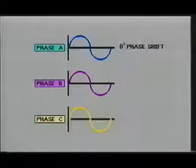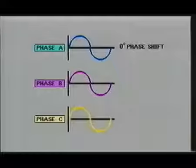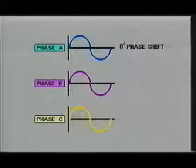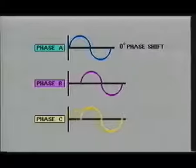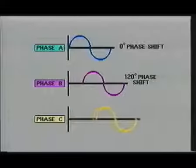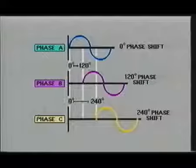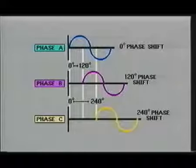In order to make these three identical AC sine waves work together in their most efficient manner, we must separate them by equal amounts. Since a complete AC cycle consists of 360 degrees and we need an equal separation between the three AC signals, we will need to separate them 120 degrees from one another.